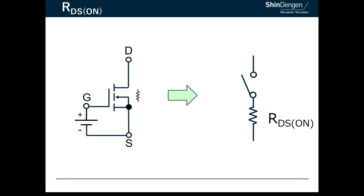The resistance between drain and source is called RDS(ON). The ideal value for RDS(ON) is zero, but actually the RDS(ON) has a slight value.